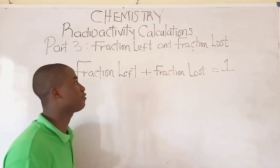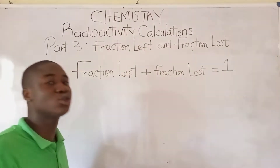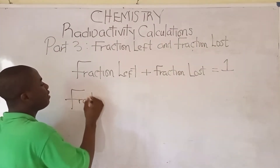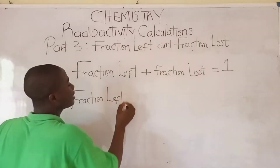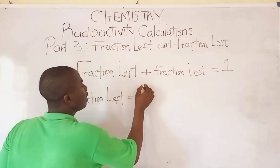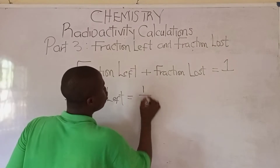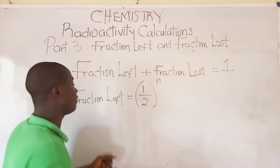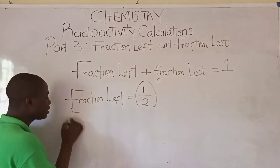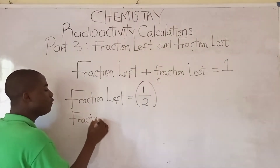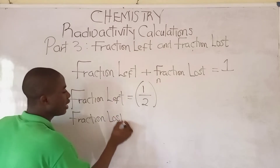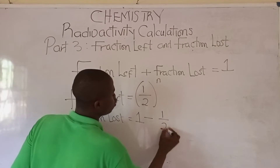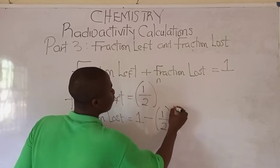How do you solve for fraction left? How do you solve for fraction lost? For fraction left, the formula is 1 over 2 raised to the power of n. What is the formula for solving fraction lost? It is 1 minus 1 over 2 raised to the power of n.